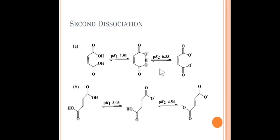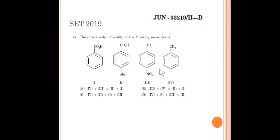The pK values clearly show the difference between first and second dissociation. Remember: the smaller the pK, the stronger the acid. Now, a question from MH-SET 2019 June: arrange the correct order of acidity for the given molecules. Many students rush to look at substituents and overlook the functional groups. Keep in mind that carboxylic acids are always more acidic than phenols or other compounds, so the COOH-containing compounds are the most acidic.